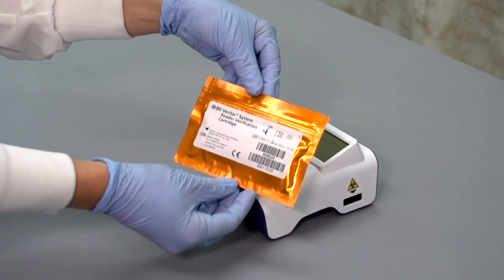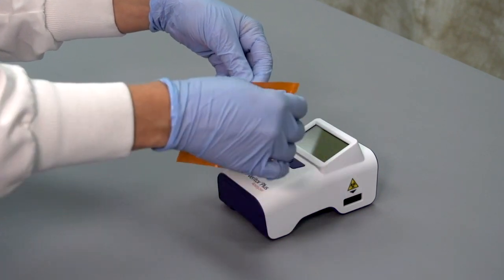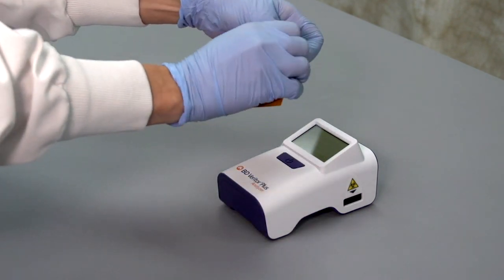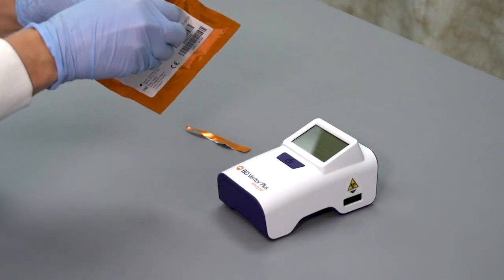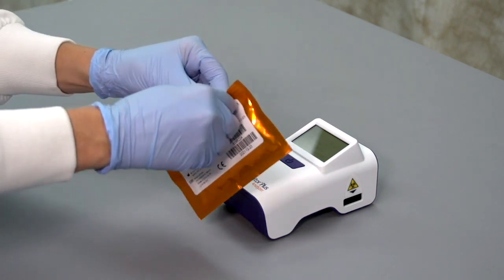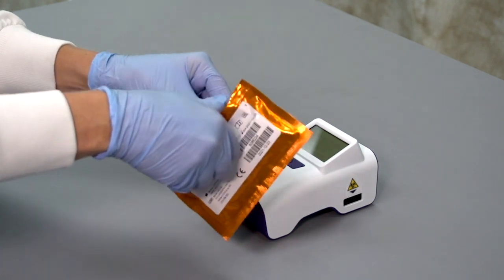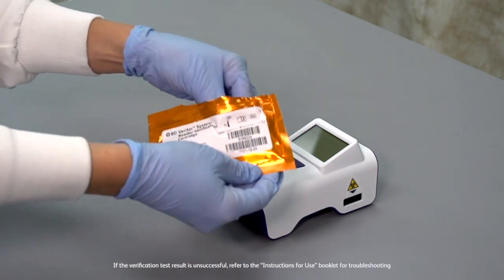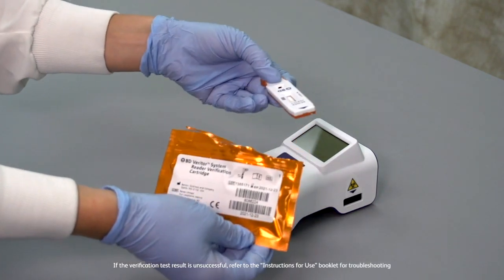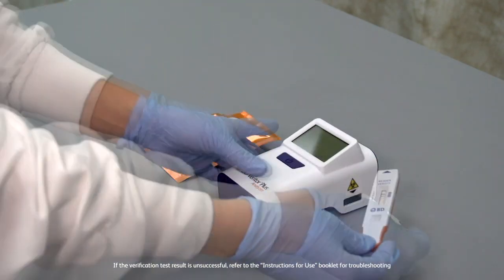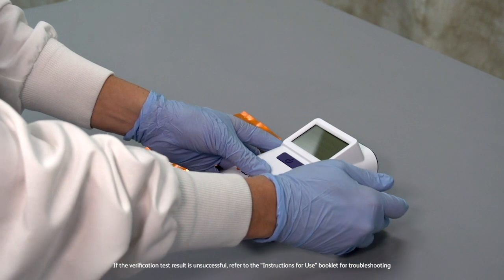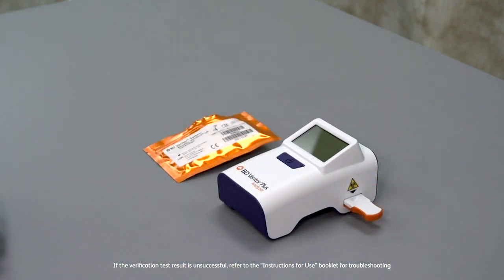For the first time use of a BD Veritor Plus Analyzer and before testing patient specimens, a system verification check should be performed with a supplied and reusable verification cartridge. Using the Analyze Now test mode, simply insert the orange verification cartridge into the test device slot. A distinct click indicates when the test device is fully inserted.